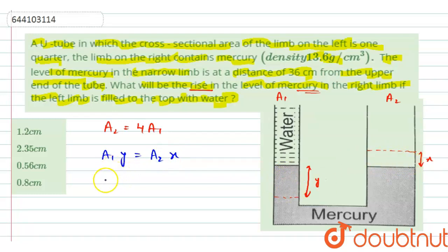The volume that is displaced from here must have come up here. So if I put the value, A2 is given as 4 times of A1 into x. From here, A1 and A1 will be cancelled out, then we will get y equals 4 times x.